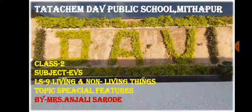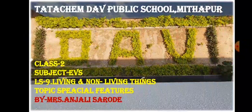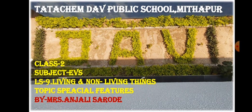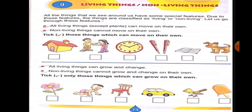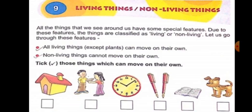Today I am going to teach you a new topic — Lesson Number 9: Living Things and Non-Living Things. Today's topic is the characteristic features of living things and non-living things. Please listen carefully, take out your book, and turn to page number 73. Write down today's date. Put your finger on the first line.